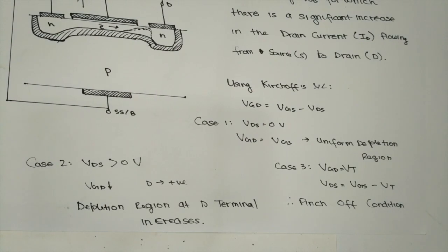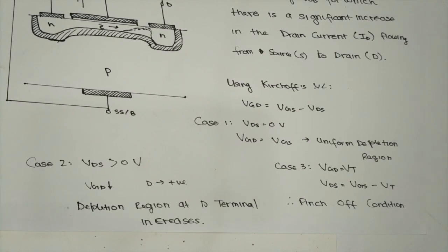On further increasing the VDS value beyond the pinch-off condition, the drain current Id does not increase further. Once pinch-off is reached, the current saturates.